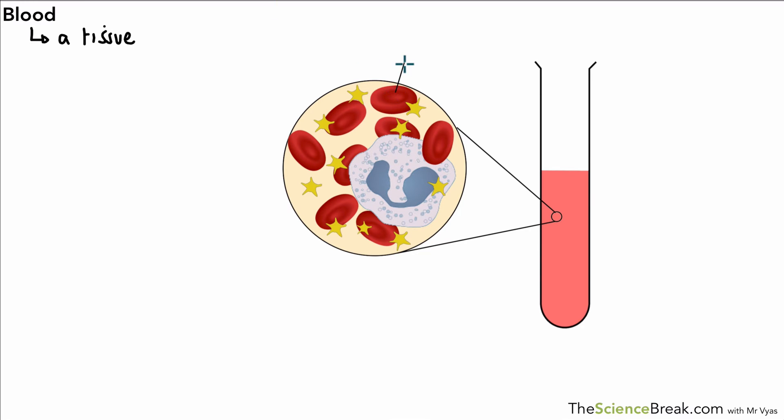If you were to look closely at this sample of blood, you would be able to see some of those different components and they are pointed out here. So the first one is the liquid part of the blood and that's called the plasma.